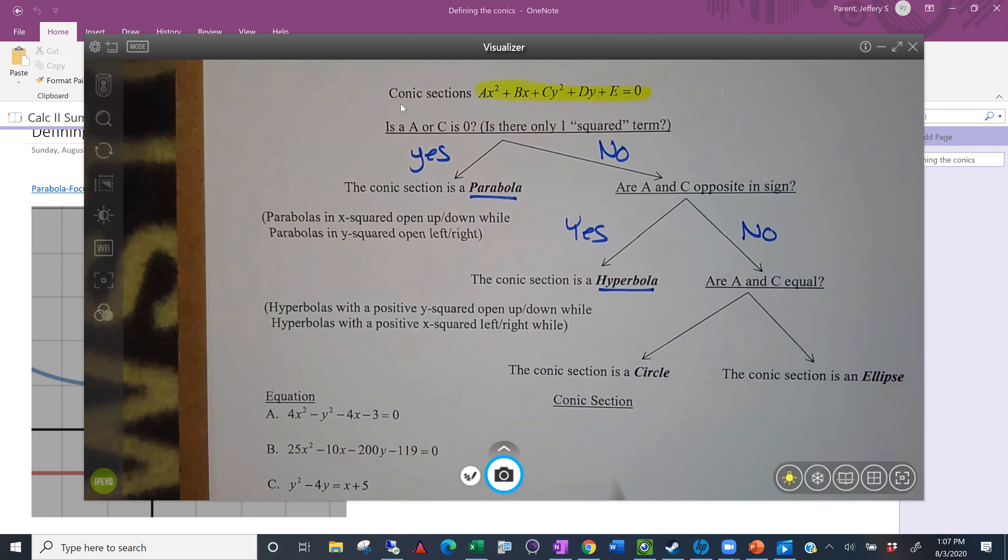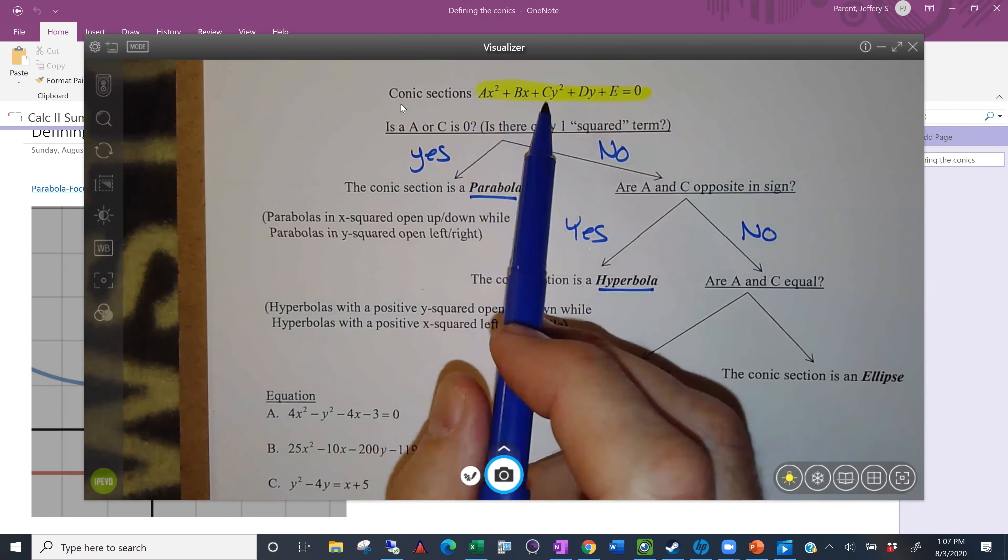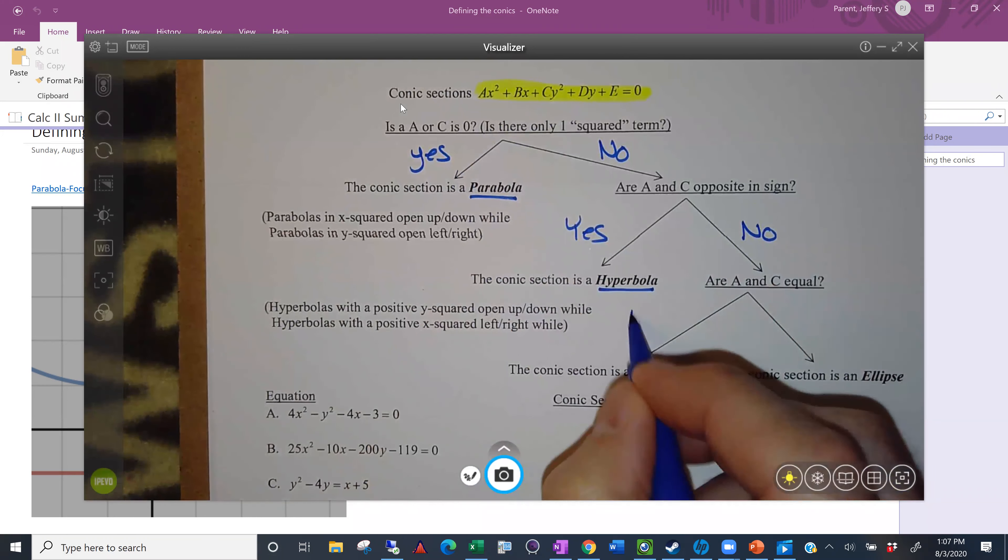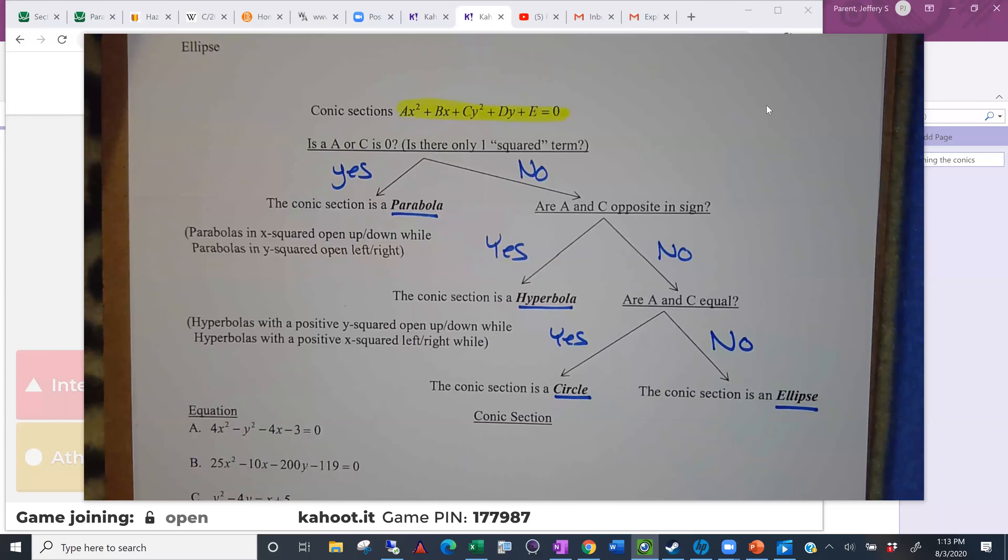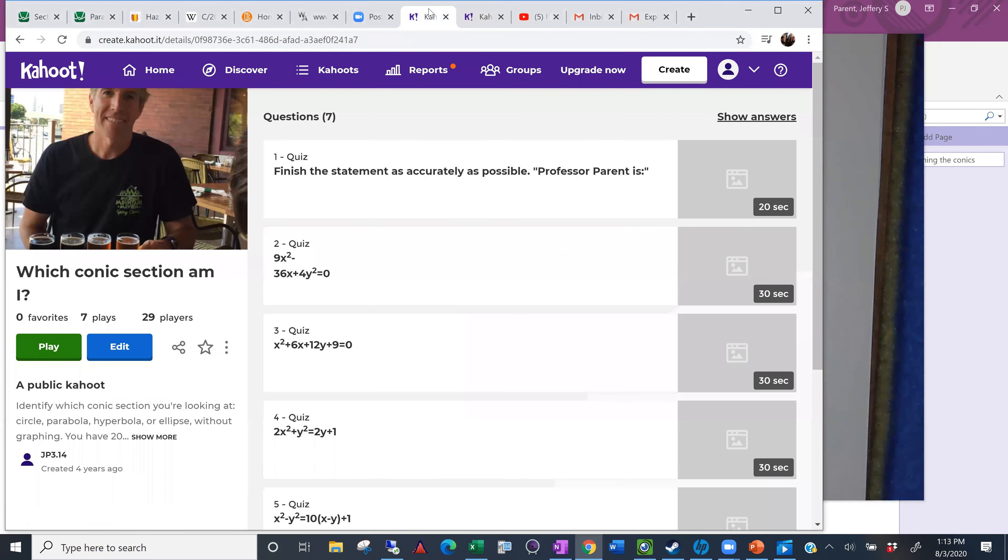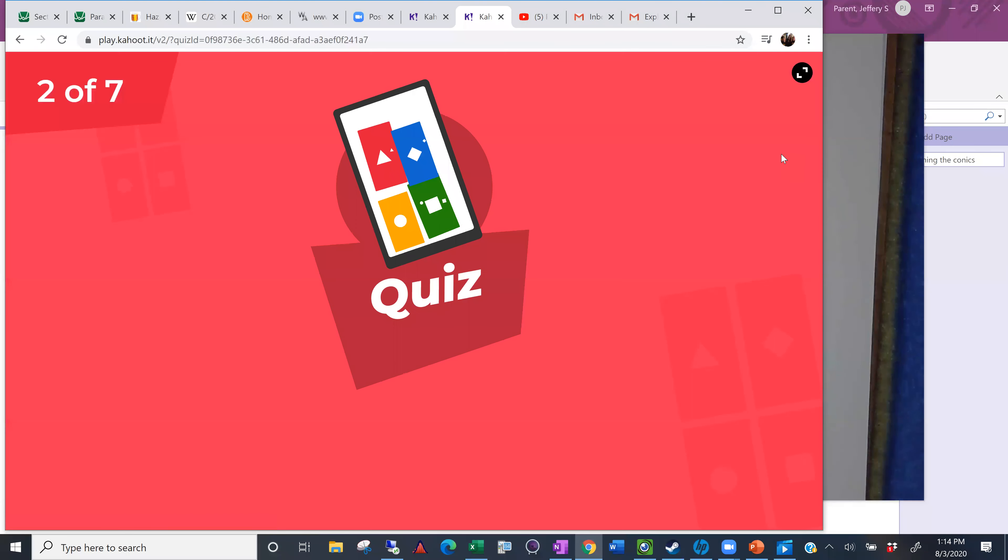Now, the last possibility is if these two coefficients for the x squared and the y squared, if they're the same, then you're dealing with a circle. And if you keep saying no to all these, then you're dealing with an ellipse. So, with that, and I can keep this up here for a minute, let's see if we can't do a little Kahoot on this to try and get you through this. Let me pause the video here for a second.